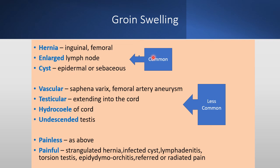The less common conditions include vascular lesions such as saphena varix, femoral artery and femoral artery aneurysms. Testicular swellings especially related to the cord, undescended testis in children, and cystic hydrocele of the cord also in children. Groin swellings can be painless or painful. Painful causes are usually due to strangulated hernia, infected cysts, lymphadenitis, torsion of the testis, epididymal cysts, and referred or radiated pain to the inguinal region.